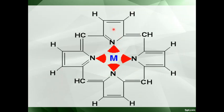Here you can see the four pyrrole rings — one, two, three, and four. The nitrogen of the pyrrole ring is connected with the metal atom; all four nitrogens are connected with the metal atom. This is basically the structure of porphyrin because you can see no side chain is attached here. The pyrrole rings are attached by the methanol bridges, and no side chain is present.